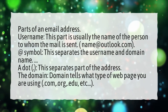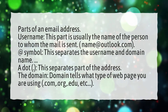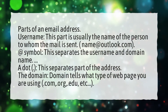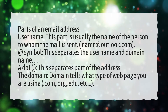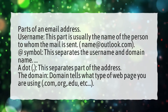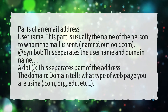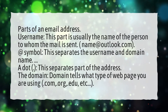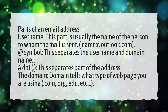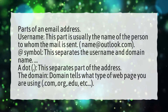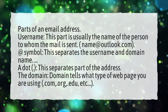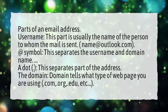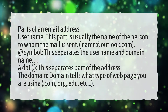For example: name@outlook.com. The at symbol separates the username and domain name. The domain tells what type of webpage you are using: .com, .org, .edu, etc.